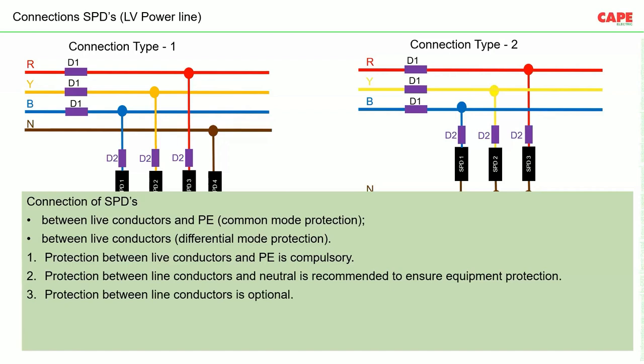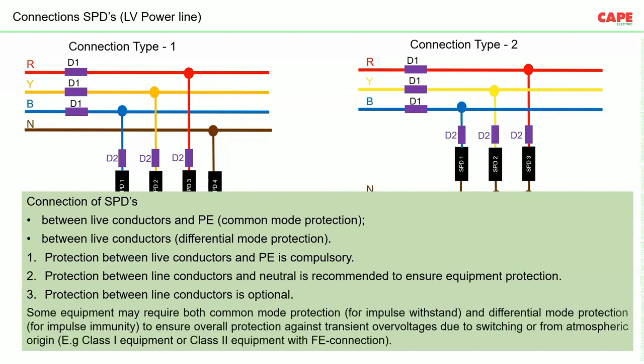Protection between line conductors is optional. Some equipment may require both common mode protection for impulse withstand and differential mode protection for impulse immunity, to ensure overall protection against transient voltage due to switching or from atmospheric origin — for example, class 1 equipment or class 2 equipment with PE connection.